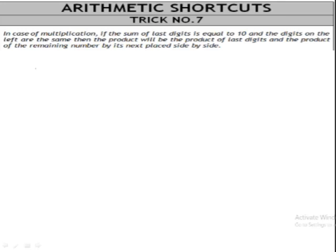Arithmetic shortcuts trick number 7. In case of multiplication, if the sum of last digits is equal to 10 and the digits on the left are the same, then the product will be the product of last digits and the product of the remaining number by its next, placed side by side. Now what does it all mean? Let's see.